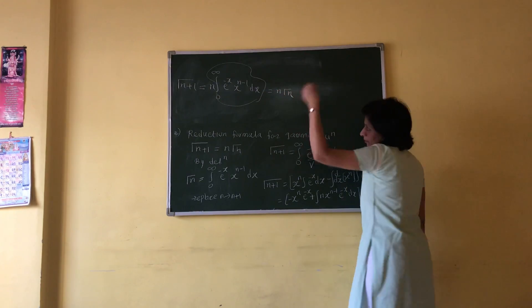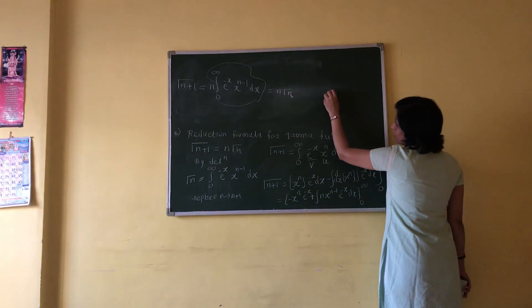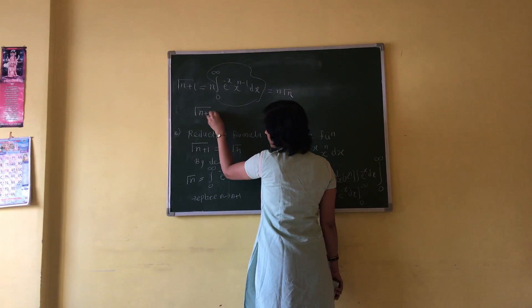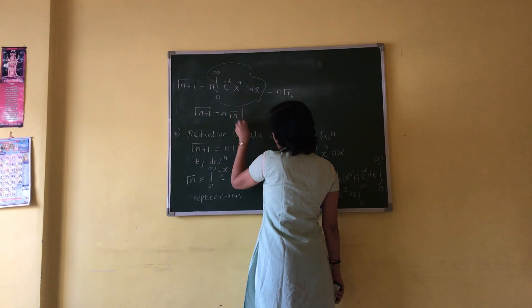That is n times gamma n. Therefore, the second property is gamma of n plus 1 equals n gamma n.